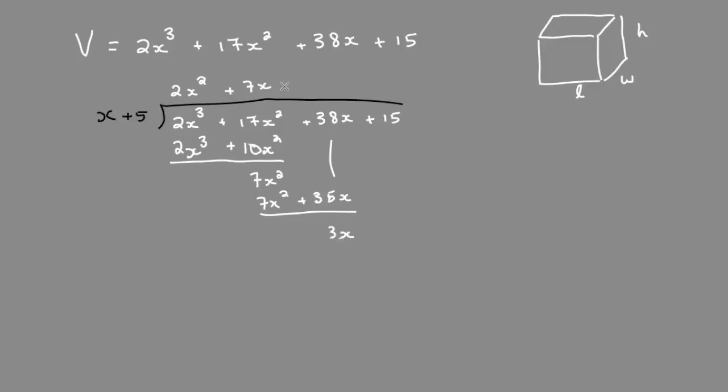What times x gives us 3x? 3. Multiply that by the binomial again, and subtract, remainder 0.